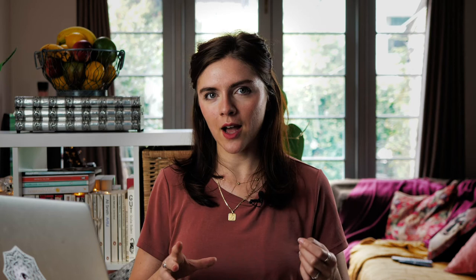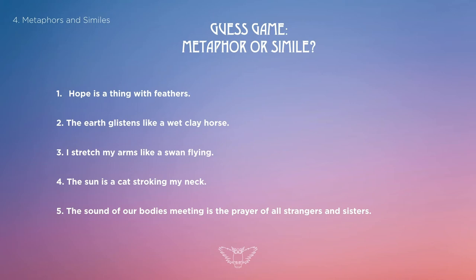Hopefully that gives you a better sense of the difference. Now let's look at some really famous quotes in literature and see whether you can identify what is a simile and what is a metaphor. Number one: 'Hope is a thing with feathers.' Two: 'The earth glistens like a wet clay horse.' Three: 'I stretch my arms like a swan flying.' Four: 'The sun is a cat stroking my neck.' Five: 'The sound of our bodies meeting is the prayer of all strangers and sisters.'